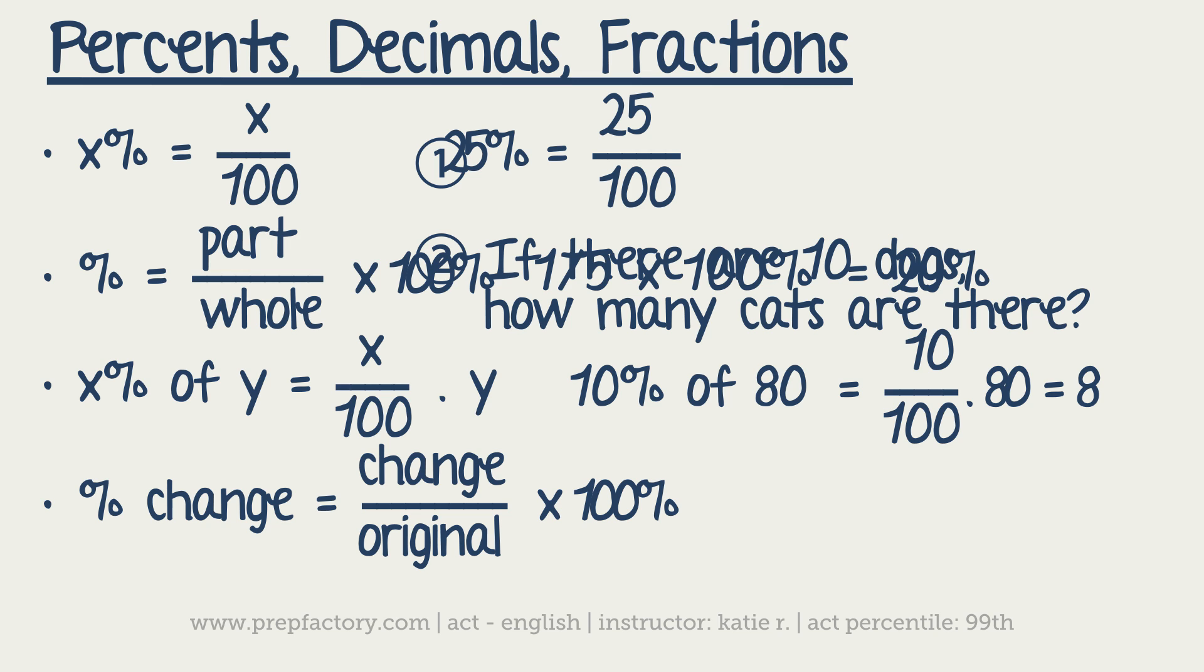Otherwise, you end up with like 0.333 as your answer instead of your appropriate answer. So this would equal 0.33 repeating times 100%, which is equal to 33.33 percent, et cetera. Okay, so the shirt is on sale for a third off, basically.